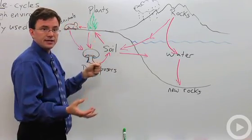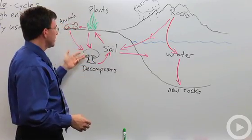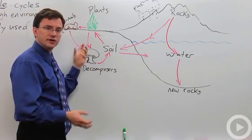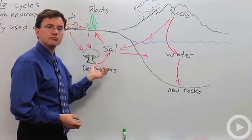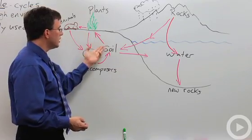Then animals come along, they eat the plants, and then they can access the phosphate in that manner. When they die, decomposers can break down the phosphates that are in the animals or in the plants and return that phosphate to the soil where it can be picked up again by the plants.